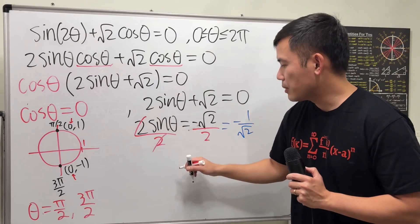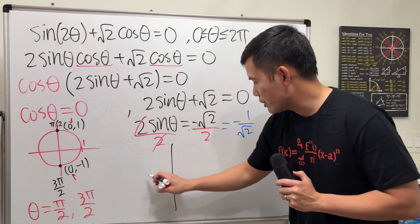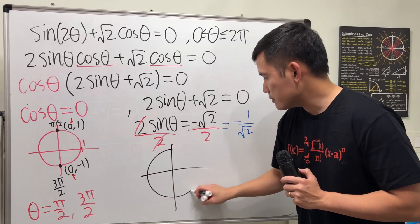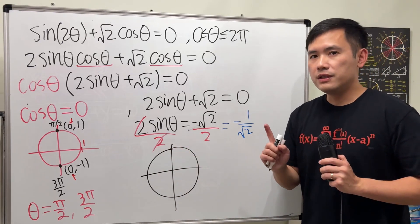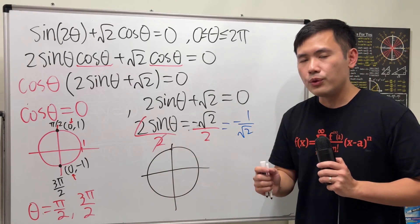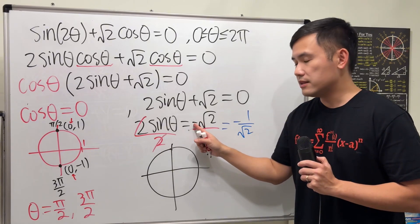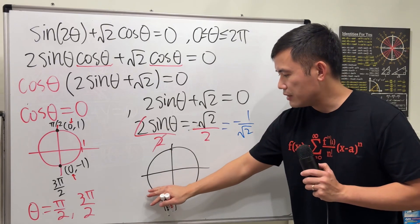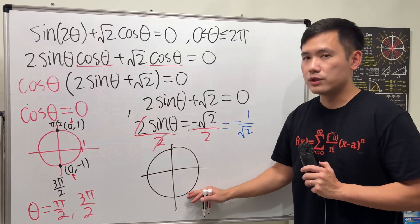Now we will have to remember sine of what angle gives us negative square root of 2 over 2. Again, we can utilize and think about the unit circle. I'm just going to draw it right here. Firstly, sine is the y value on the unit circle. And this is negative. So we must have the answer in the third and also the fourth quadrant.